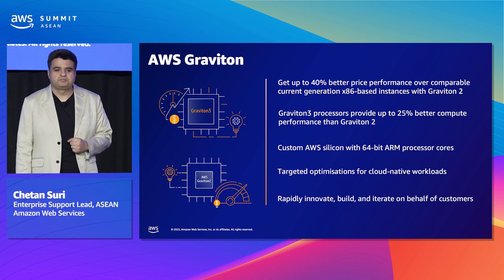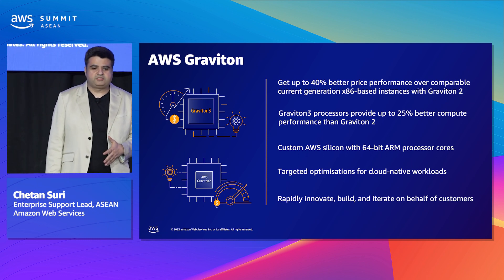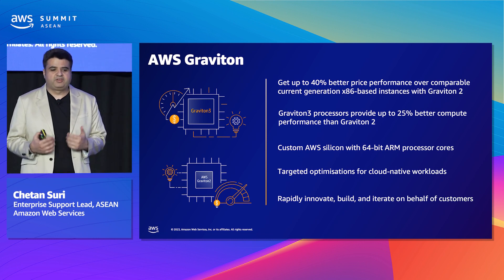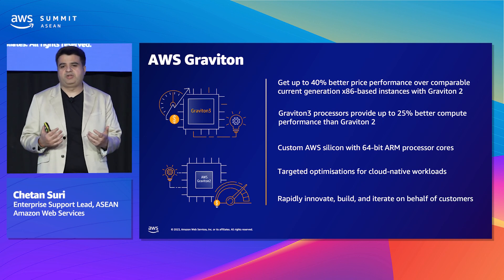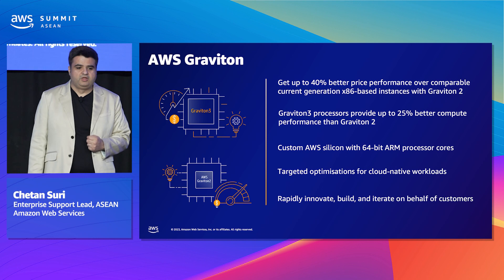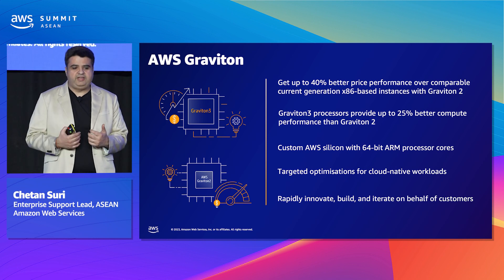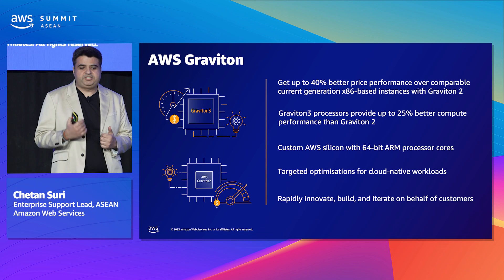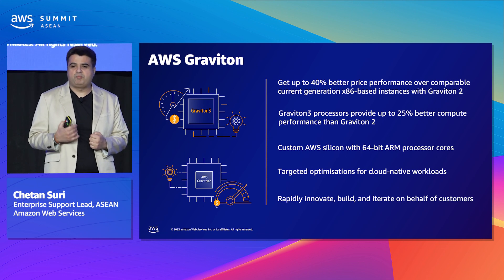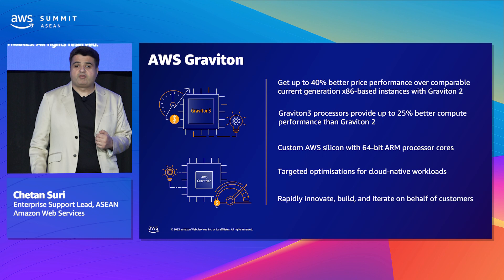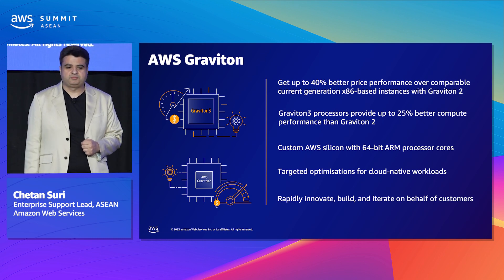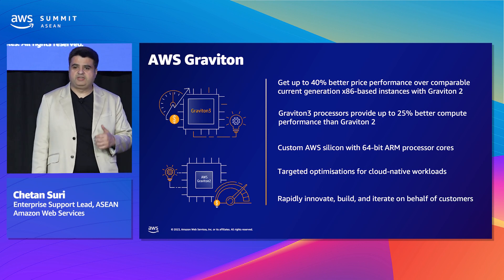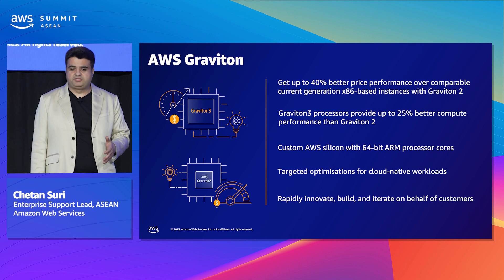Thousands of customers have already adopted Graviton and realized significant savings, benefiting from compute performance and price performance. Graviton is highly energy efficient, using up to 60% less energy than comparable instances in AWS. Graviton is available for EC2 workloads and also for AWS managed services. Graviton 2, launched in 2019, provides up to 40% better price performance compared to equivalent x86-based instances.